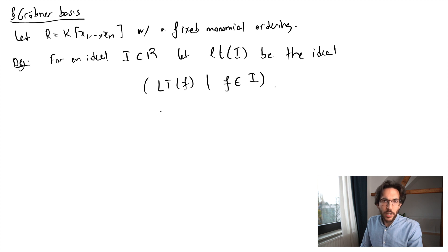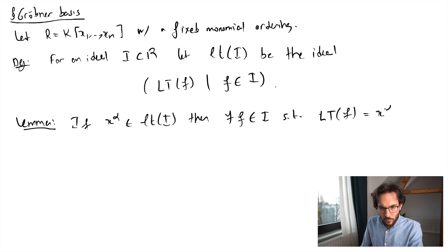So we've talked about monomial ideals. By definition, this is a monomial ideal. And in particular, I would like to make the following observation. So I claim that whenever you have a monomial inside of this ideal of leading terms, then there exists in fact a polynomial whose leading term hits that monomial.